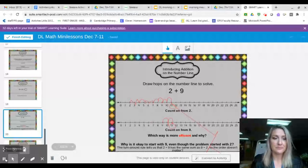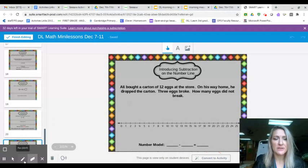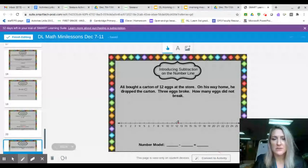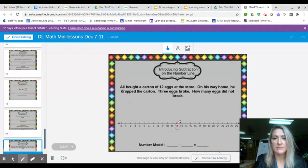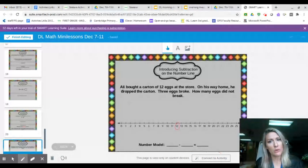Now think about how this story is different. Ally bought a carton of twelve eggs at the store. Okay, so what did she do? She bought twelve eggs. So I'm going to keep that number twelve in my head. I might even circle it on the number line because that's where I'm going to start. She bought twelve eggs at the store. On his way home he dropped the carton. Is there a number in that sentence? No, but listen carefully. Three eggs broke.